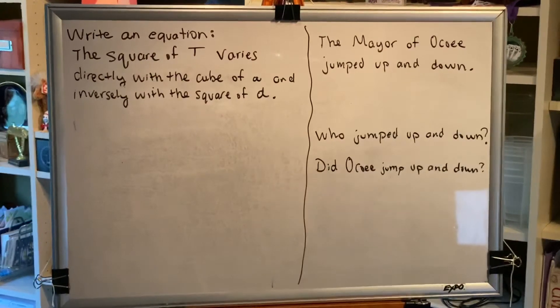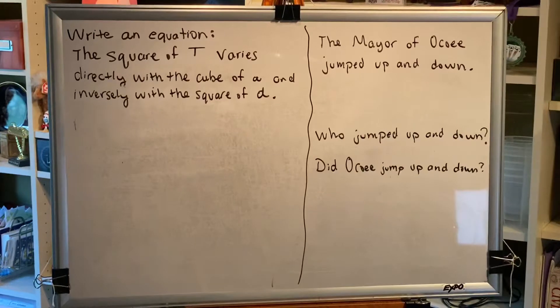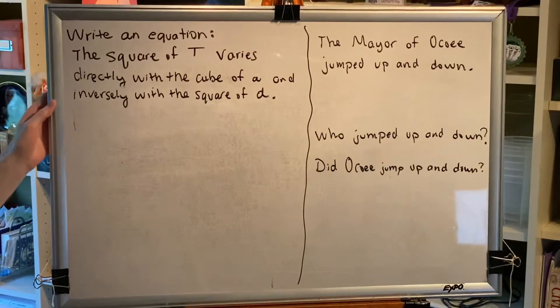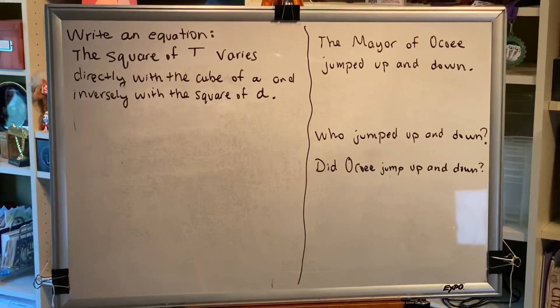The topic of this video is constructing a model using variation. Let's look at a problem. Write an equation. The square of t varies directly with the cube of a and inversely with the square of d.